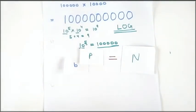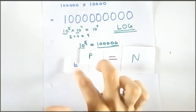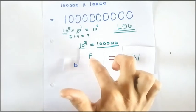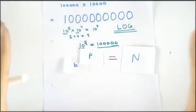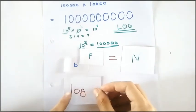This is the most tricky part, so pay a little more attention. Here are three variables: b, p, and n. Now we are going to convert it to log. Now here is the log, right?